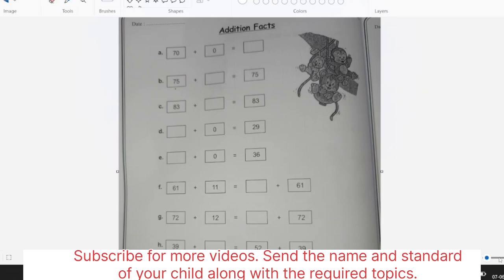Here 70 plus 0. If child is aware of the first addition fact, 70 plus 0 is 70 only. Now this blank, what should be added to 75 that the answer is 75? That is 0. 83 plus what number should be added to get 83 only? So that is 0. Which number should be added with 0 to get 29? That is 29. You will help the children in solving this worksheet. 0, what should be added with 0 to get 36? That is 36.